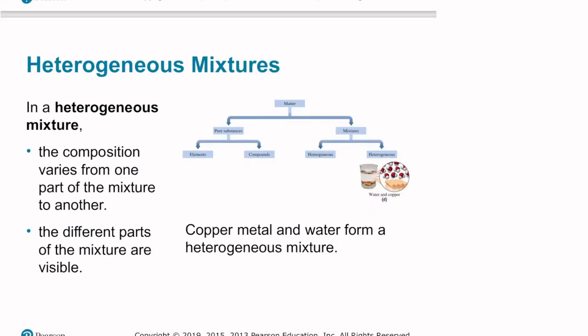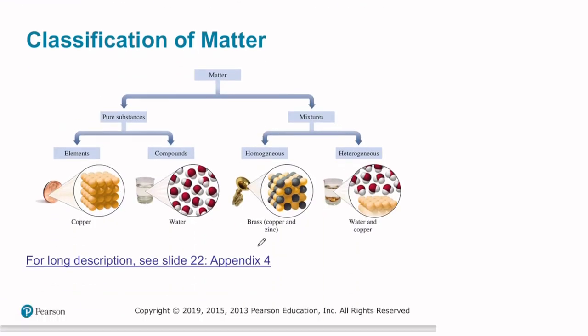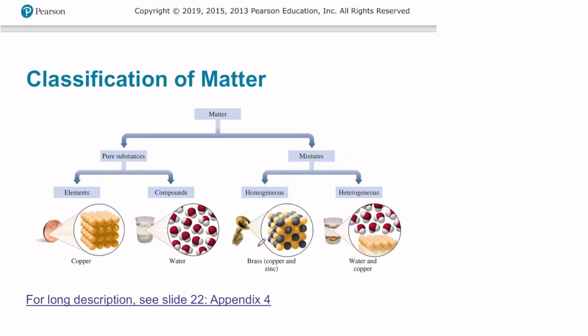The other category of mixtures is a heterogeneous mixture. In a heterogeneous mixture, the composition varies from one part of the mixture to another, and the different parts of the mixture are visible. Copper, metal, and water form a heterogeneous mixture. Another heterogeneous mixture, as I mentioned earlier, would be sand and water, or perhaps even dirt and water, like mud.